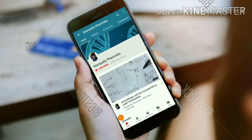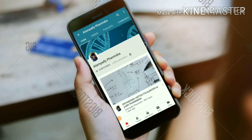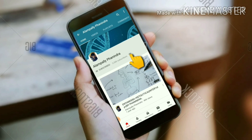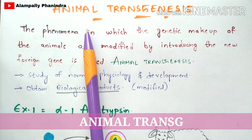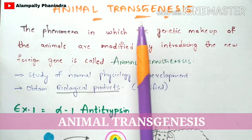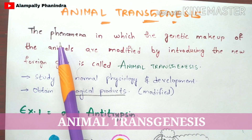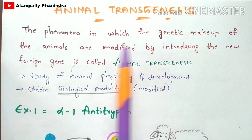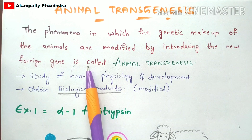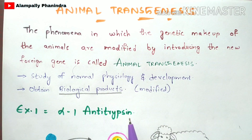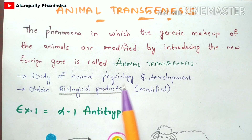Hi friends, if you like my videos, subscribe to my channel and press the bell icon for the latest updates. In this video, let us discuss about animal transgenesis — the phenomenon in which the genetic makeup of animals is modified by introducing a new foreign gene. This process is called animal transgenesis.